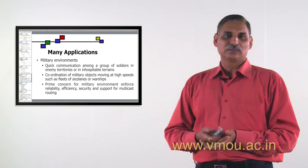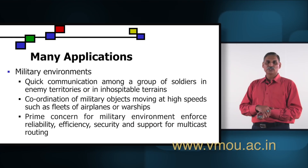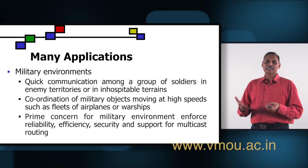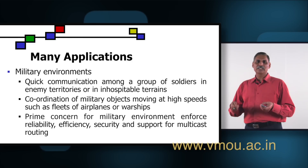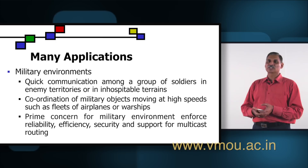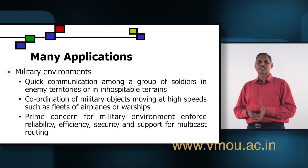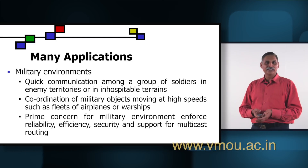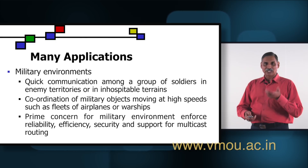As far as applications of wireless ad hoc networks are concerned, the first one is the military environment. In fact, it started from military applications only — quick communication among a group of soldiers in enemy territories or inhospitable terrains where it is not possible to put wired connections or any fixed infrastructure. There, wireless ad hoc networks are the only solution. Another use is the coordination of military objects moving at high speed, such as a fleet of airplanes or warships. Prime concerns for the military environment include reliability, efficiency, security, and support for multicast routing.